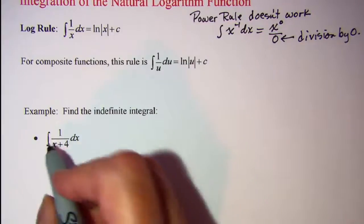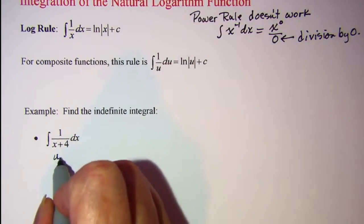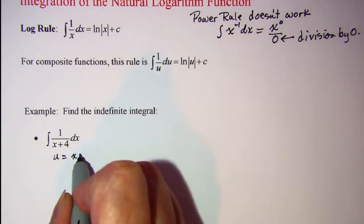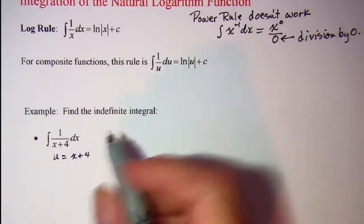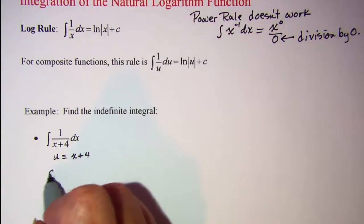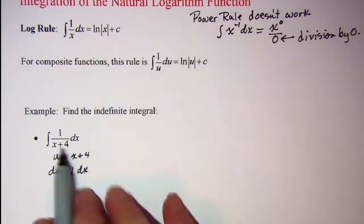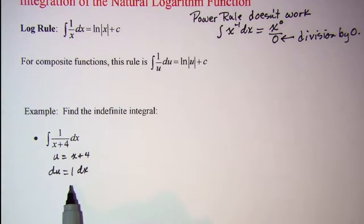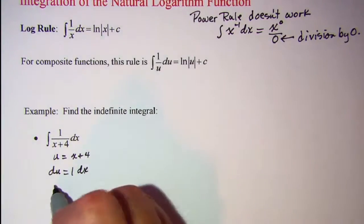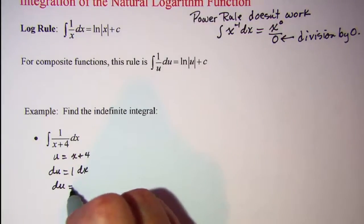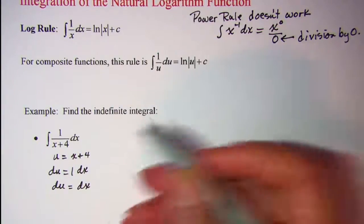Now if we let u equal x plus 4, we can see that du is going to be 1 dx. So we really don't need to use u-substitution since du equals dx, but we can.